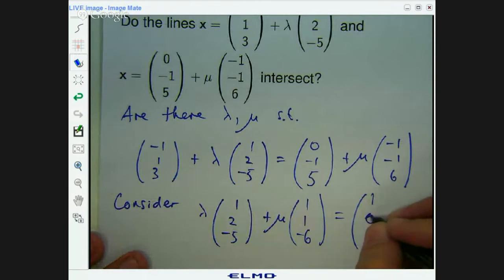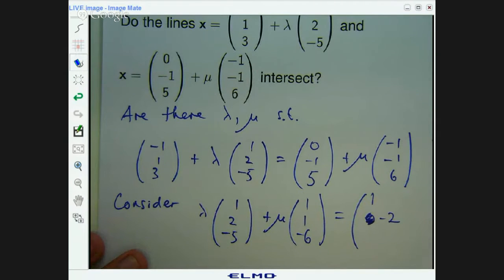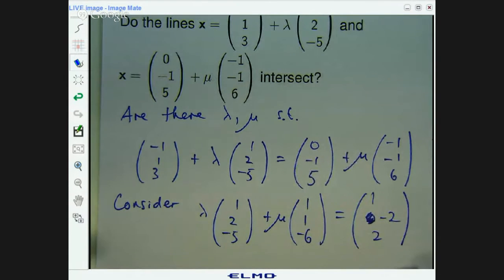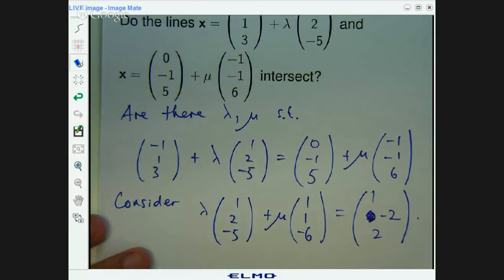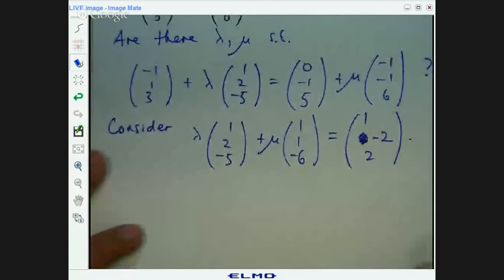I'll just write a plus mu here and change the signs inside the vector. So I'll get one, negative two, and two. All right. Now we can do something with that.